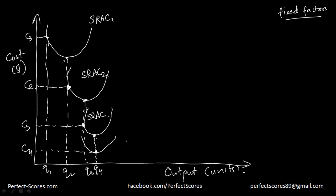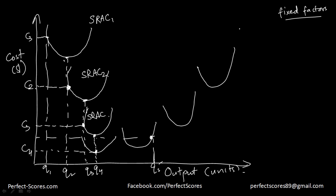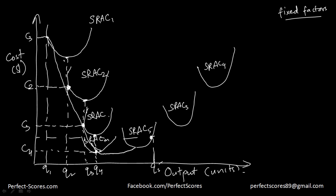After that, when you start increasing your output beyond that point, your costs are actually going to increase. If you increase the output, you will be producing more units at a higher cost. Eventually, if you keep on producing more and more units, you'll be completely using up your fixed factors. You'll need to buy more machinery and more stuff, and your cost per unit will actually increase back again. If I just connect these points, this is what I get — which would be my long run average curve.